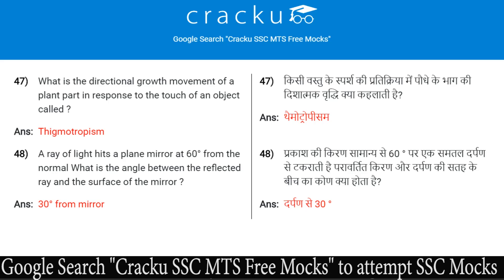A ray of light hits a plane mirror at 60 degrees from the normal. What is the angle between the reflected ray and the surface of the mirror? The answer is 30 degrees from the mirror surface.